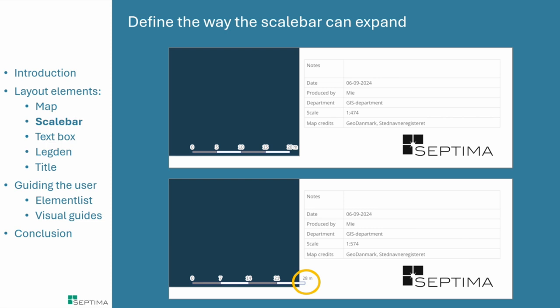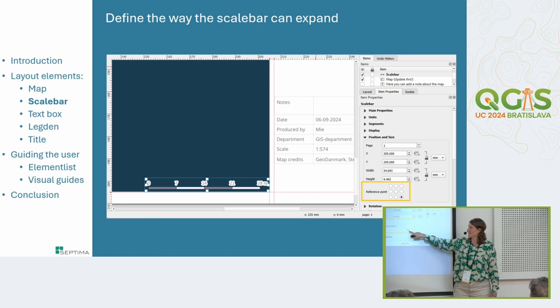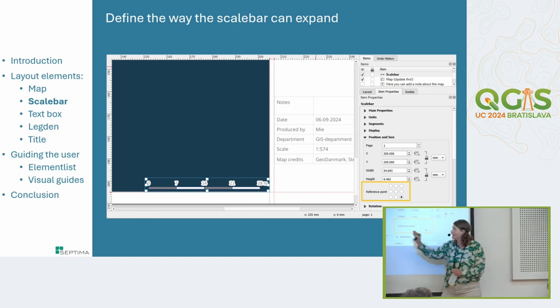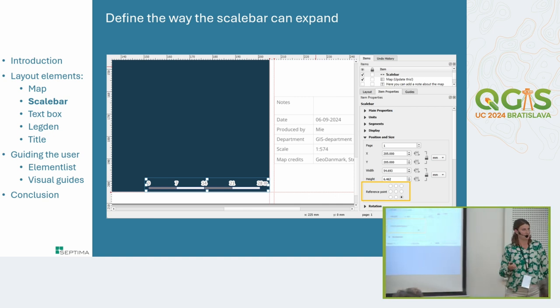Another important thing related to the scale bar and other layout elements is avoiding the situation where the scale bar moves outside the white area and looks wrong. To avoid this, it's important to think about the reference point setting, which applies to all elements you can add to a layout. If you set the reference point for the scale bar correctly, when it needs to grow slightly bigger, it will grow inward rather than outward, and you avoid that problematic layout.